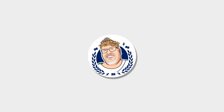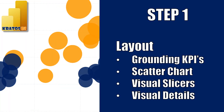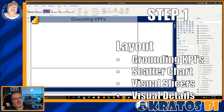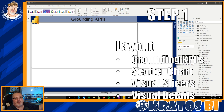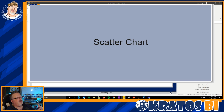The first thing I always want to do is make sure that I have my grounding KPIs. These are going to be the key KPIs that your users are going to know — the high-level metrics that will help the people consuming your reports understand what it is that they're looking at.